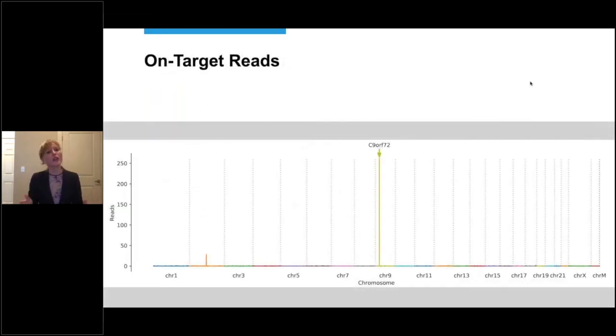And this is an example of on-target reads. You can see all the CCS reads for this particular individual, more than 250 and all the different chromosomes. And as expected, there was one big peak representing the C9ORF72 locus. And that's exactly what we wanted to see, a lot of on-target reads.